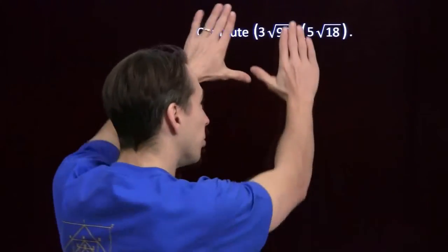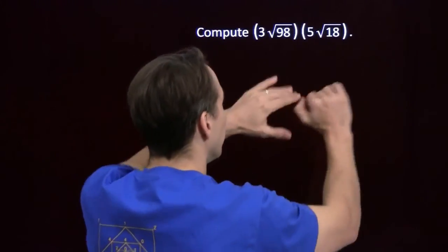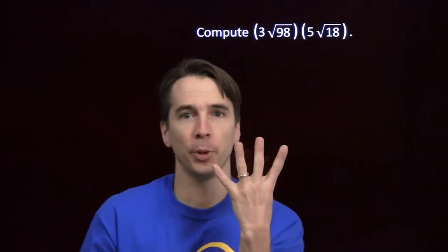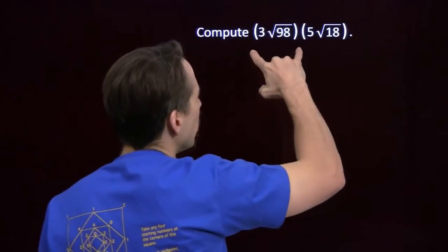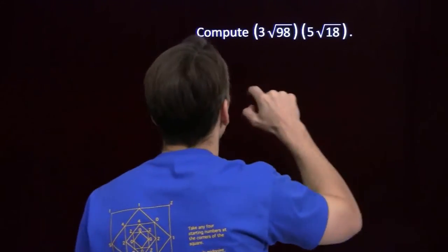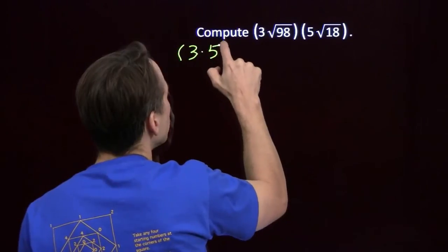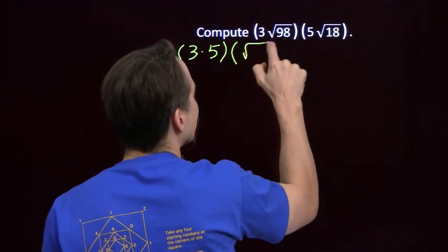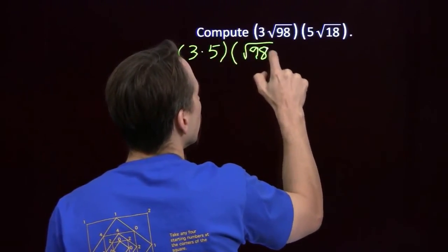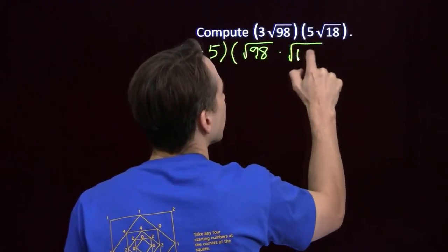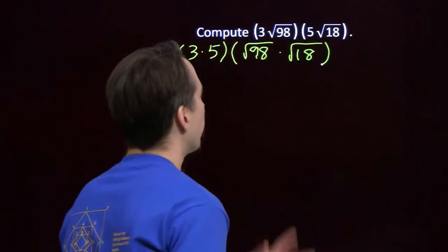Looks like we're multiplying two numbers here, but we're really multiplying four numbers. We've got a 3, square root of 98, a 5, and a square root of 18 — we're taking four of these numbers and multiplying them together. We can multiply them in whatever order we want, so I'm gonna group the 3 and the 5, and group the two square roots, because that'll let me use that clever gimmick that the other guy taught us.